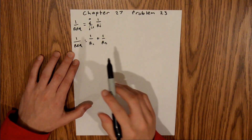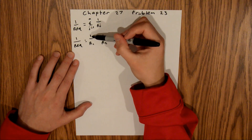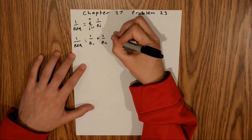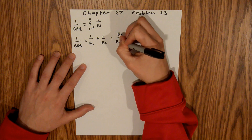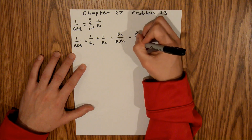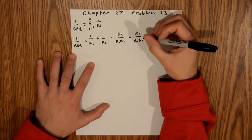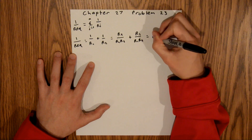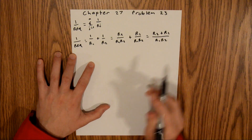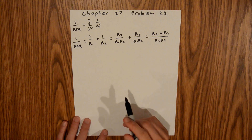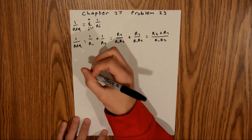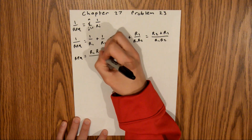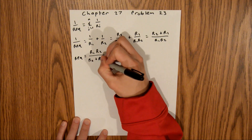To combine these terms, we multiply the first fraction by R2 over R2, and the second by R1 over R1 to get a common denominator. That gives us R2 over R1R2 plus R1 over R1R2, which combines to R2 plus R1 over R1R2. Inverting both sides gives us R_eq equals R1R2 over R2 plus R1.